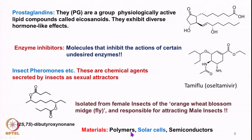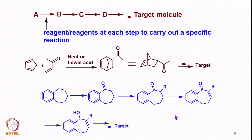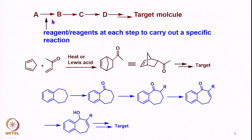There are also syntheses of various kinds of materials like polymers, solar cells, and semiconductors that require organic synthesis. Organic synthesis of a target molecule — whether a natural or non-natural product — involves a number of steps. Starting from a starting material like A and going to the target molecule through different intermediate steps, each step requires a reagent or combination of reagents to carry out a reaction, or it can also be a rearrangement.